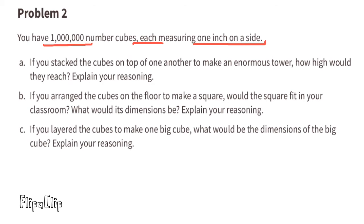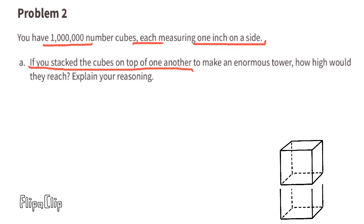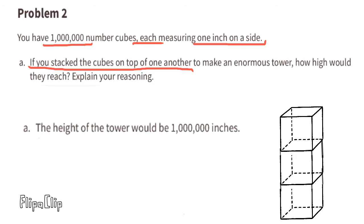Problem 2: You have 1 million number cubes, each measuring 1 inch on a side. Part A: If you stacked the cubes on top of one another to make an enormous tower, how high would they reach? Since each cube is 1 inch and you stack 1 million, the height of the tower would be 1 million inches.